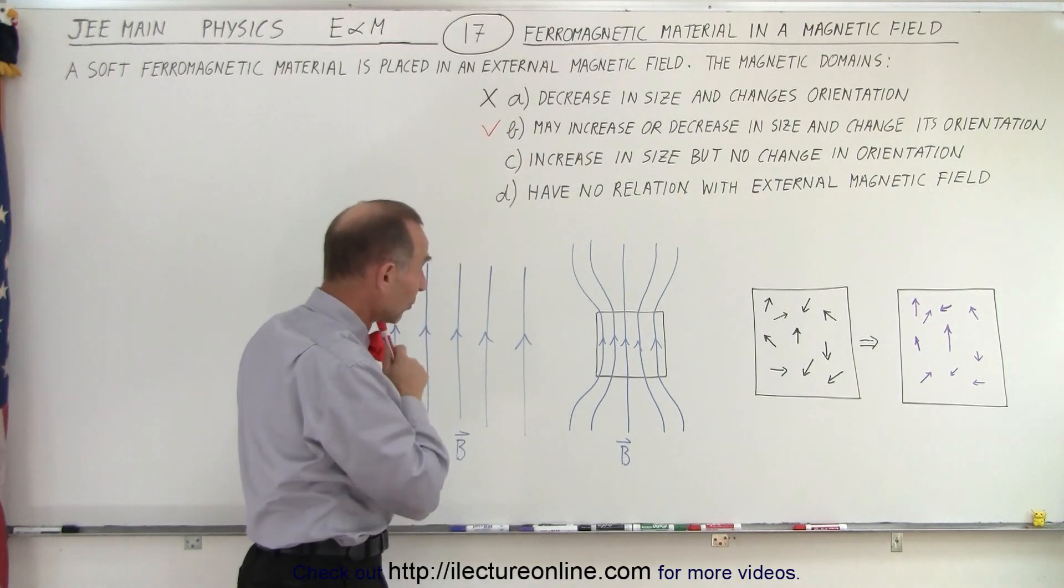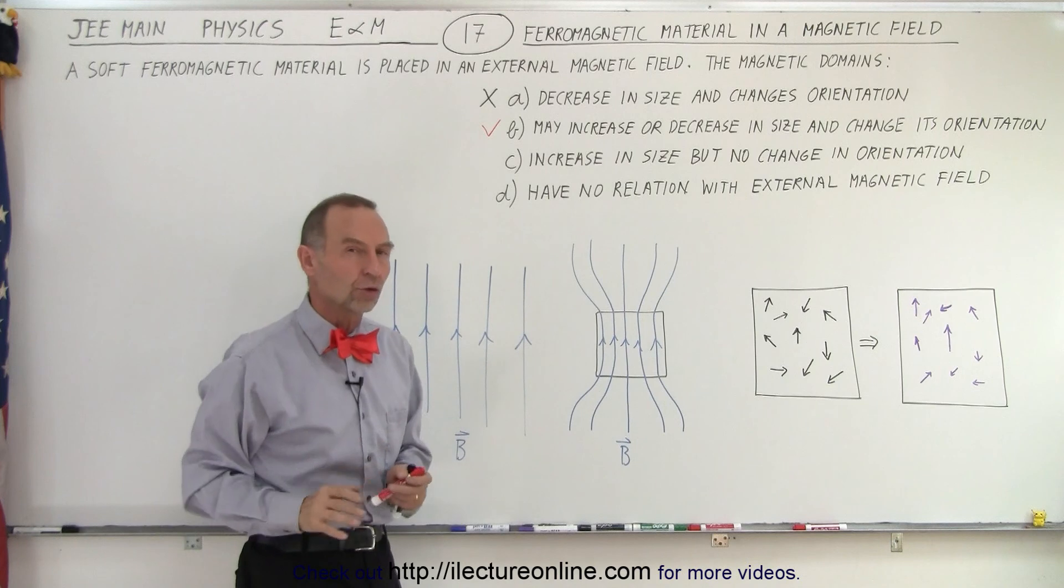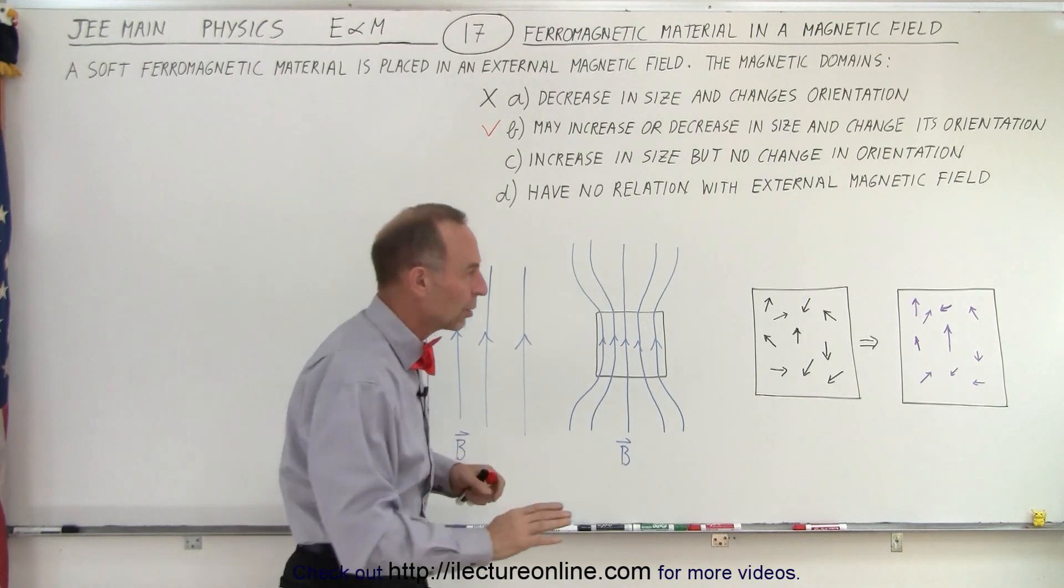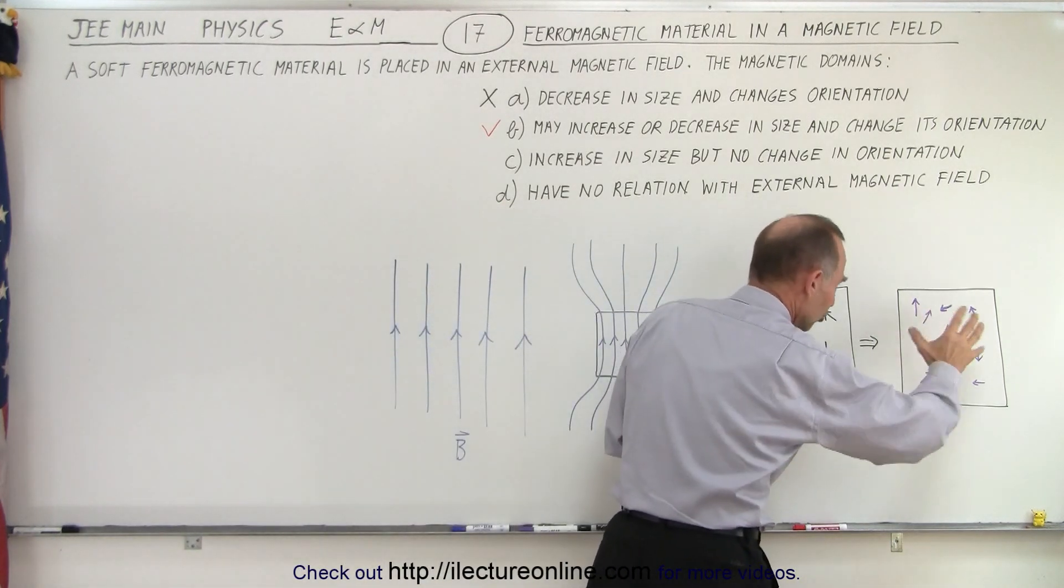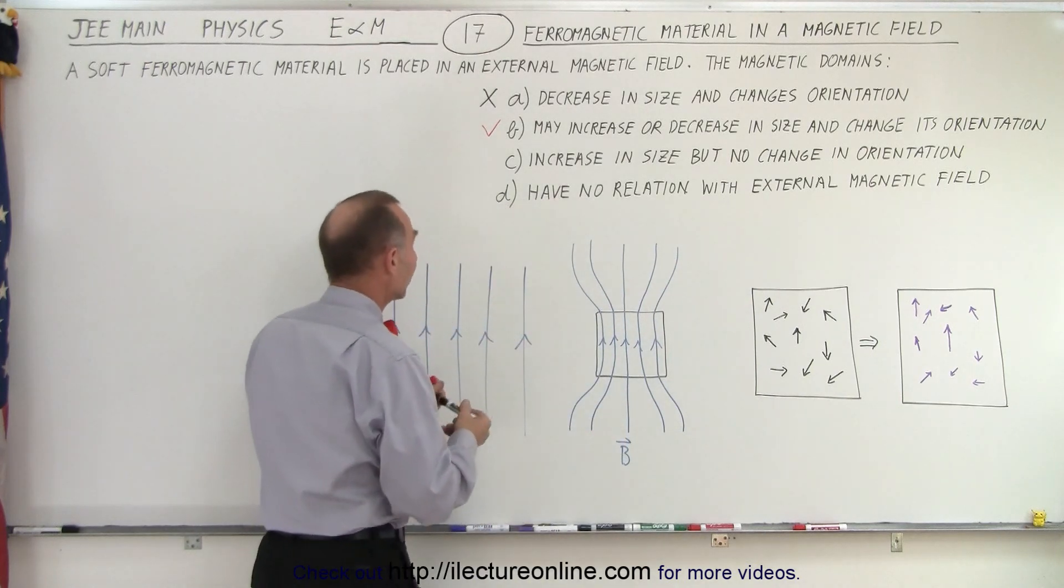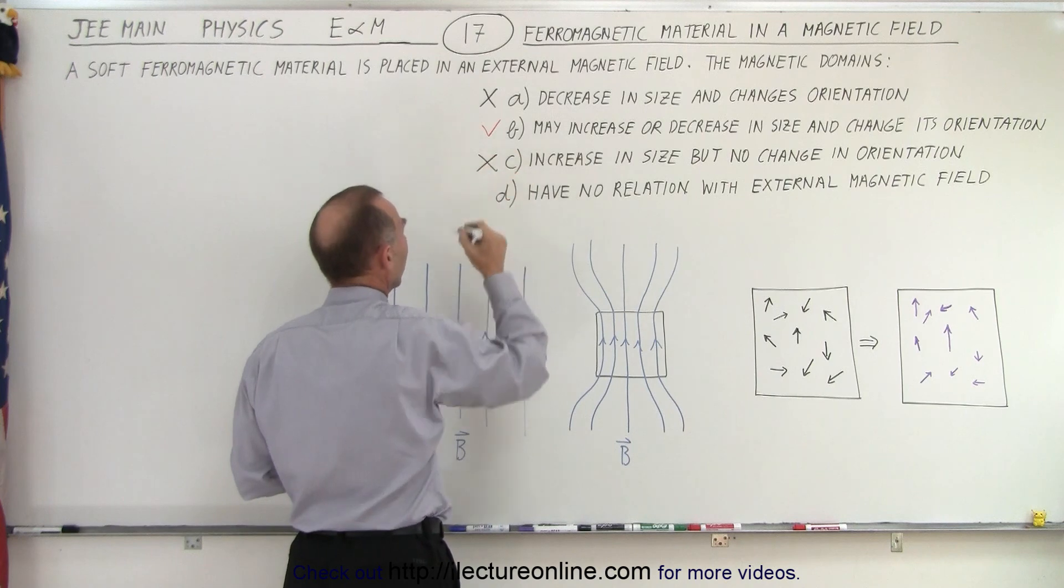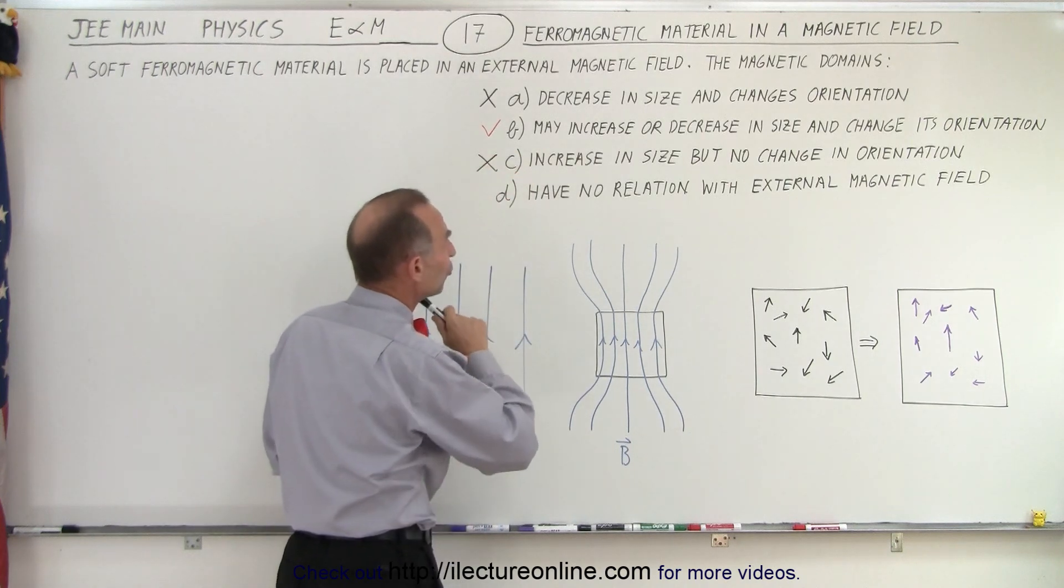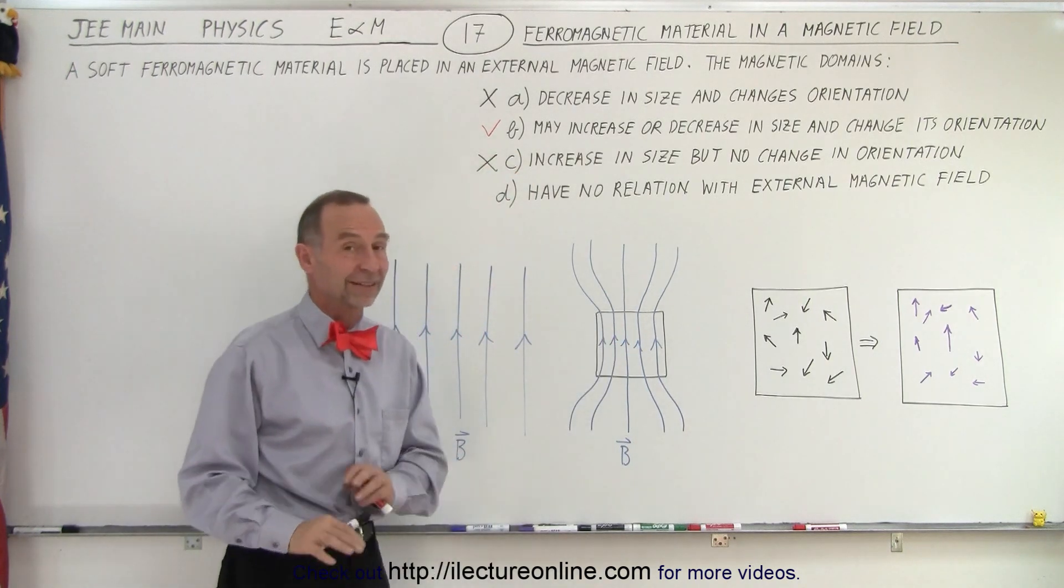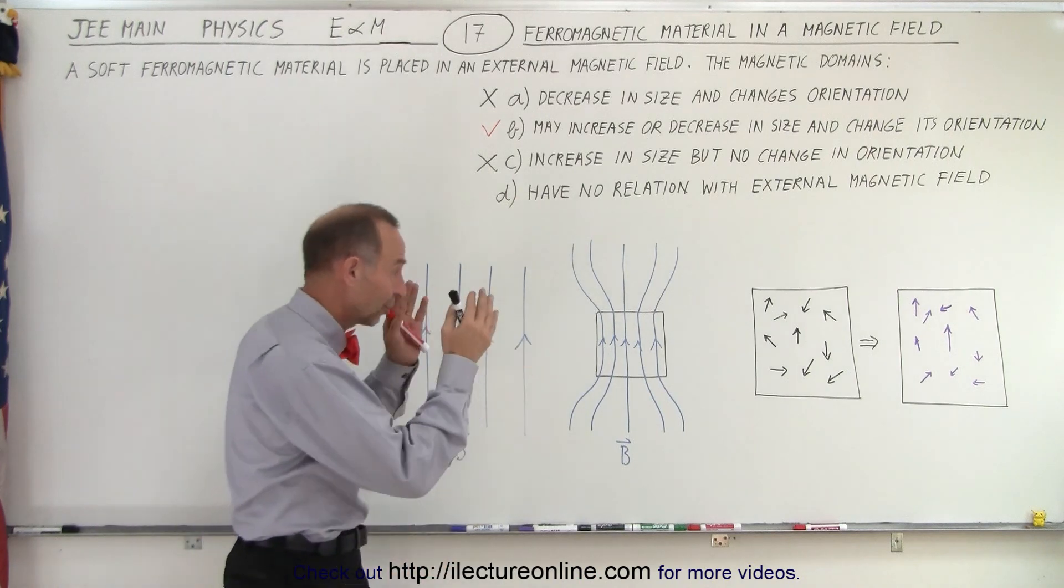The next one says increase in size but no change in orientation. Well, that one is definitely wrong. We know for sure that orientation changes will occur due to the magnetic field interacting with the atoms and molecules, so that's not correct. And the last one, have no relation with external magnetic field - that's of course not correct either, because there is an effect. That would eliminate C and D automatically.